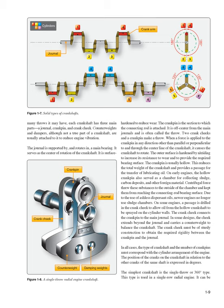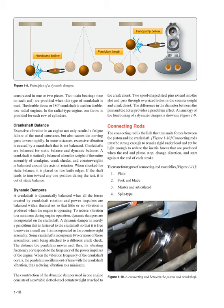The crank cheek connects the crank pin to the main journal. In some designs, the cheek extends beyond the journal and carries a counterweight to balance the crankshaft. The crank cheek must be of sturdy construction to obtain the required rigidity between crank pin and journal. The type of crankshaft and the number of crank pins must correspond with the cylinder arrangement of the engine. The position of cranks on the crankshaft relative to other cranks is expressed in degrees. The simplest crankshaft is the single-throw or 360-degree type, used in a single-row radial engine. The double-throw or 180-degree crankshaft is used on double-row radial engines, with one throw provided for each row of cylinders.